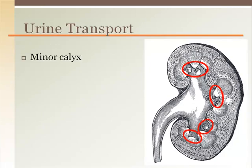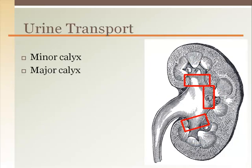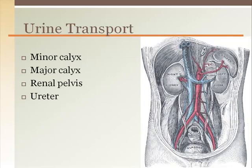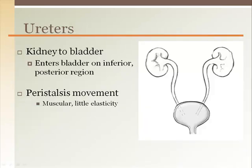The transport of urine begins at the minor calyces to the major calyces and the renal pelvis. The ureters carry the urine out of the kidney and to the bladder, entering the bladder on the inferior posterior region. The ureters are surrounded by a lot of smooth muscle, which helps move the urine from the kidney to the bladder so the urine does not rely on gravity alone. The ureters have little elasticity, which makes them something that surgeons must take extra care not to cut, as they are very difficult to repair.